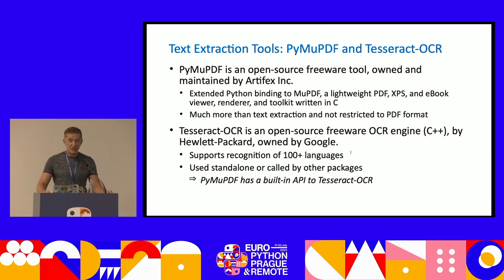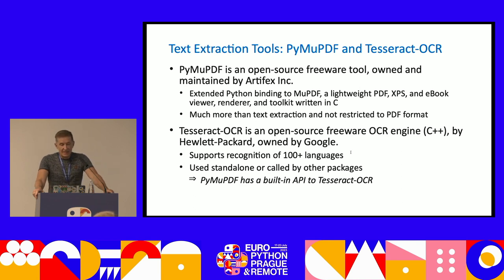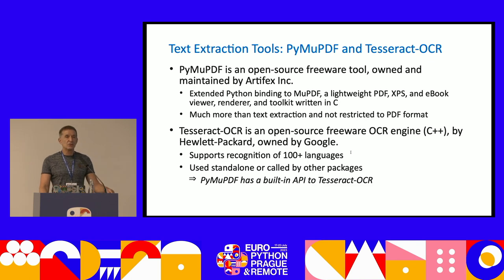The tools I'm suggesting, using, and have used are PyMuPDF and Tesseract OCR. Both are open source and freeware. PyMuPDF — by the way, I'm the creator — is a Python binding to the C library MuPDF. PyMuPDF can process not only PDFs but also XPS, EPUB, and a few other formats. Tesseract OCR is an OCR engine that can be used standalone or called as a sub-process by PyMuPDF.